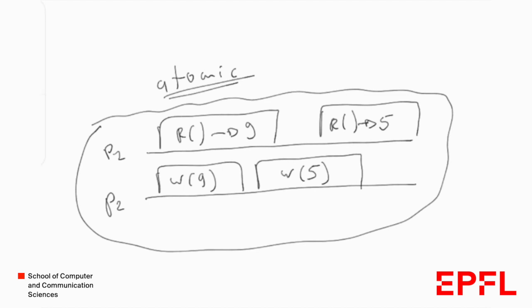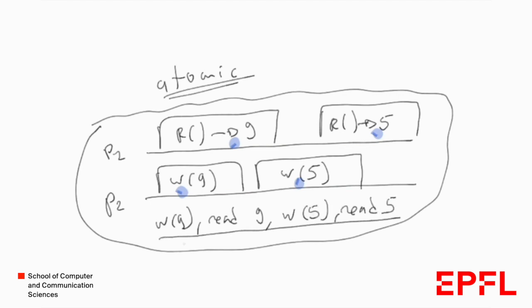For example, with processes P1 and P2 where P2 writes 9 then 5 and P1 reads back 9 then 5, the linearization points could be: first write 9, then read 9, then write 5, then read 5. Ordering operations by their linearization points gives us the sequential behavior we would expect from a sequential register.